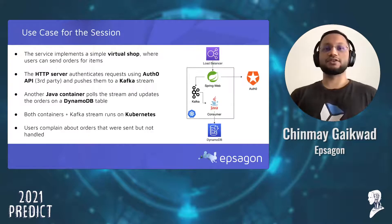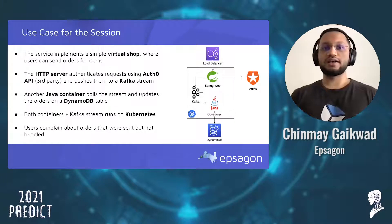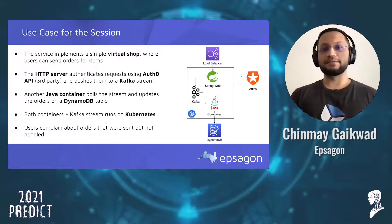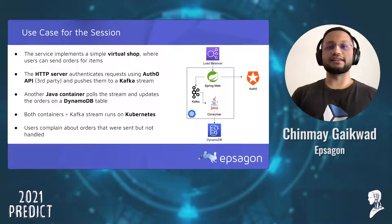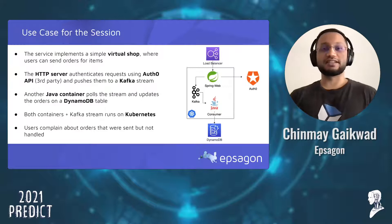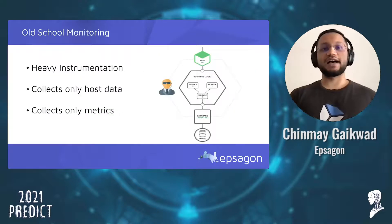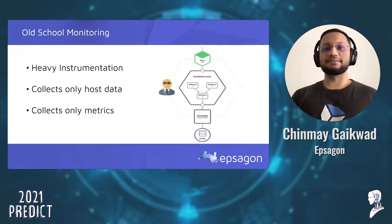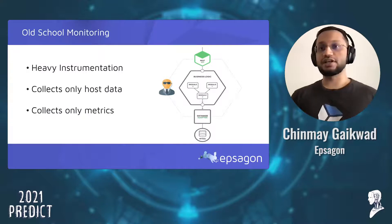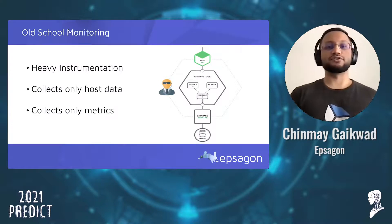Let's consider an example of a virtual shop. The HTTP server authenticates requests using Auth0 and pushes them to a Kafka stream. A Java container posts the stream and updates the DynamoDB table. Let's say users complain about orders that were sent but not handled. Traditional monitoring solutions come at the expense of higher resource utilization and can only collect host metrics, leaving gaps in coverage — especially for container and serverless environments.